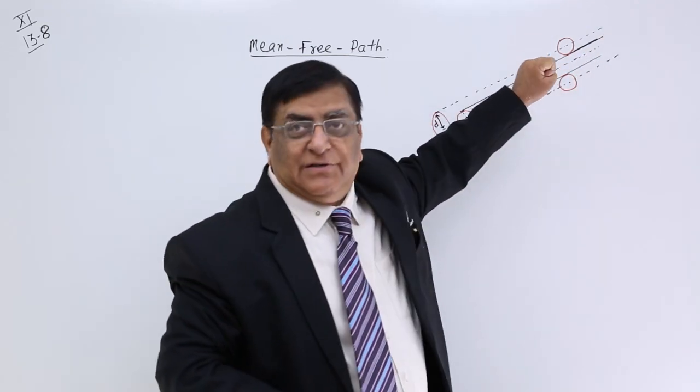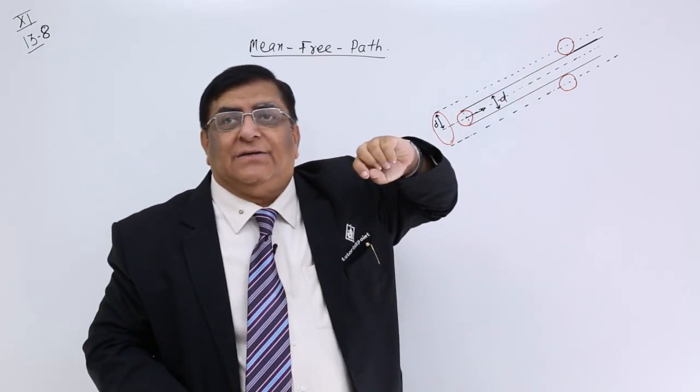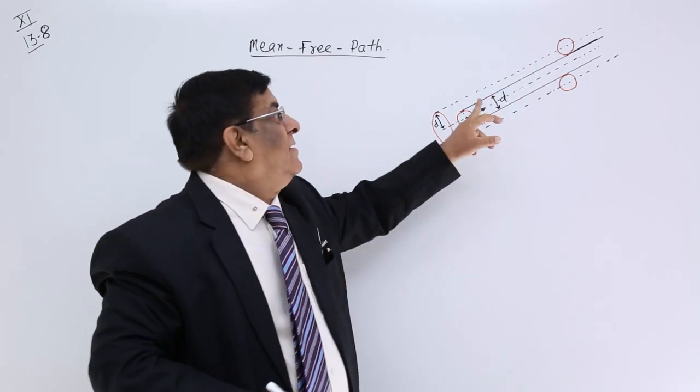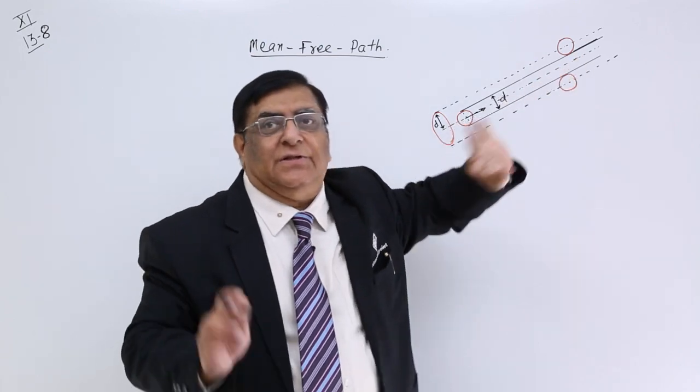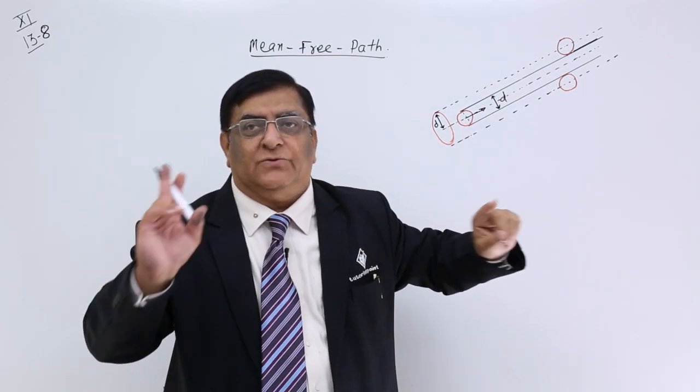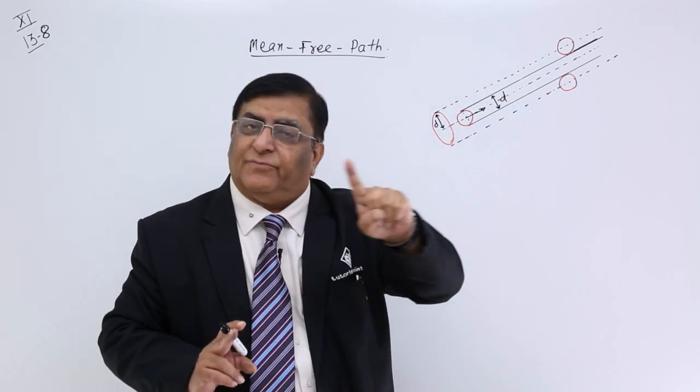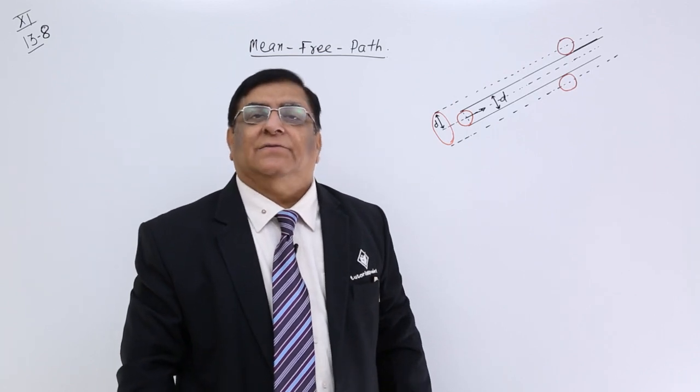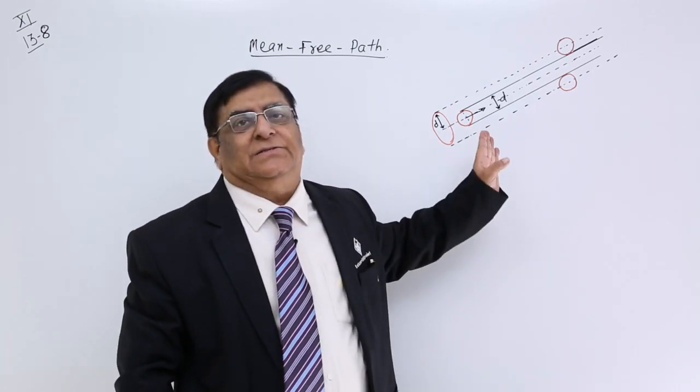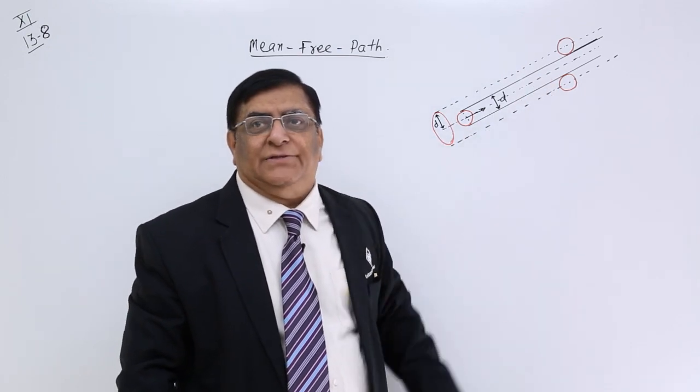If it is less than this, then it will strike. That means the collision, the moment it collides, the free path is over. So the free path is the path without collision and the time period of free path is for that much time till it collides.